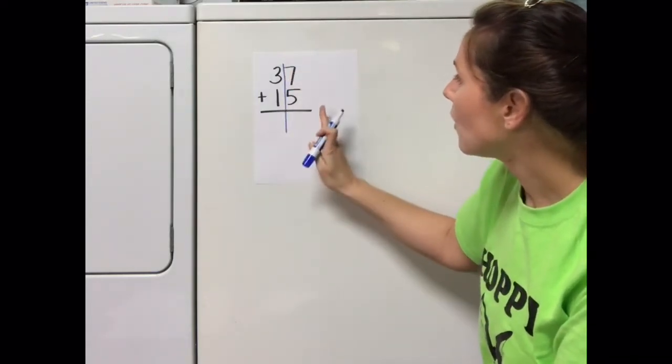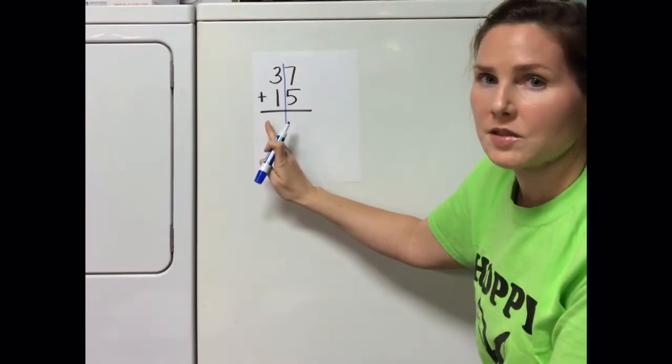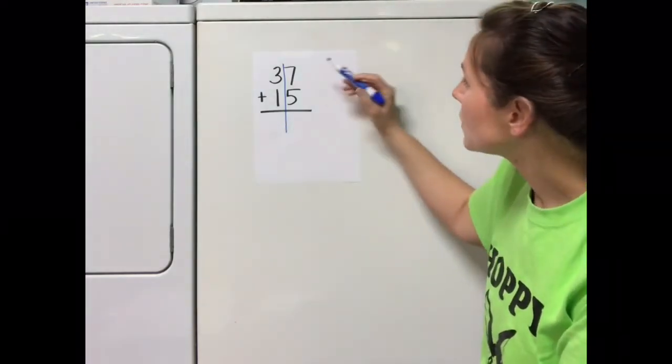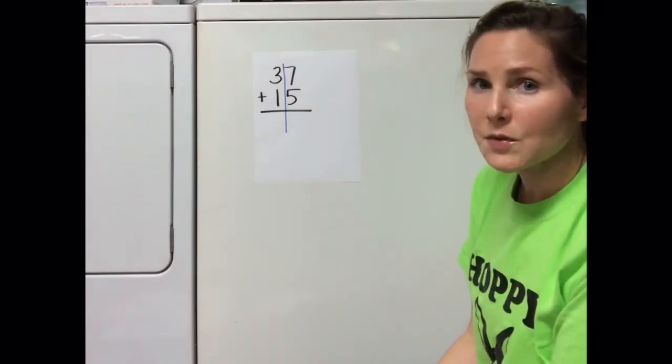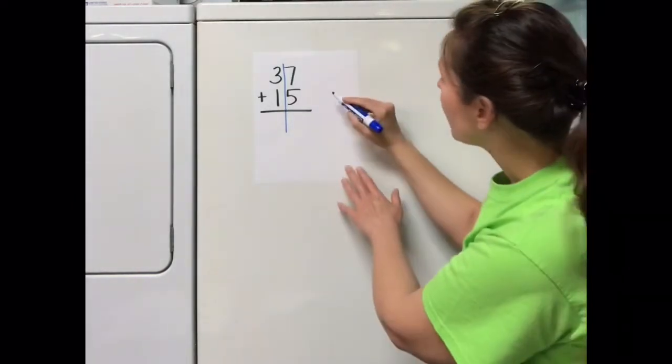Let's do another problem. This problem says 37 plus 15. Let's go ahead and divide the problem so that we can see our ones column as well as our tens column. In the ones column we've got 7 plus 5. 7 plus 5 is equal to 12. I'm going to go ahead and write that off to the side.